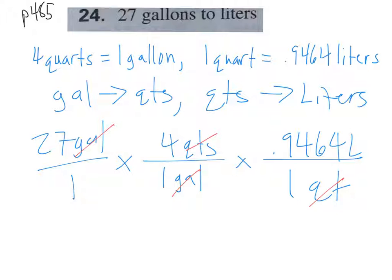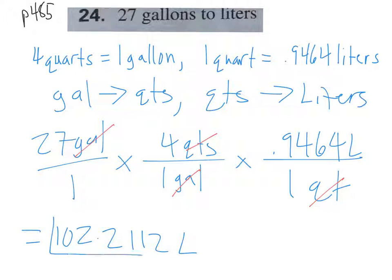Multiply those three numbers together and you get about 102.1 liters. Since we had four decimal places in our conversion rate, I kept four decimals in the answer. The whole point of this problem is to show that sometimes you have to make multiple conversions, but you can string them all together in one big fraction. If we needed to convert further, we'd just add another fraction with the next conversion rate, making sure the previous unit goes on the bottom each time to cross-cancel.